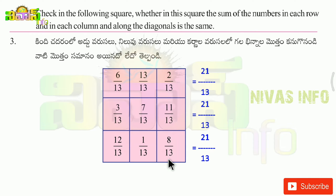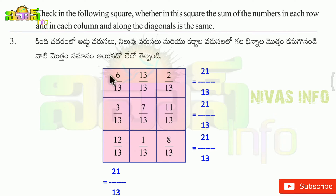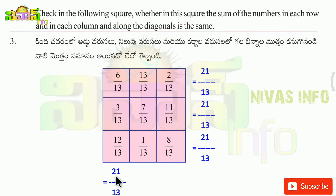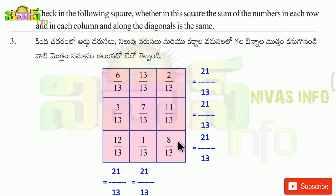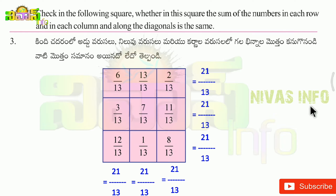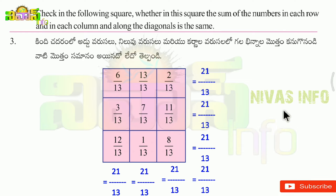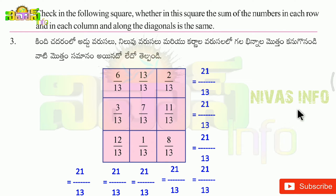Now we change to column-wise. Column 1: 6, 3, 12 = 21. Column 2: 13, 7, 1 = 21. Column 3: 2, 11, 8 = 21. Diagonal: 6, 7, 8 = 21. Other diagonal: 2, 7, 12 = 21.